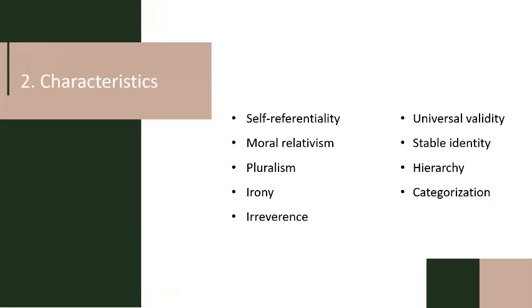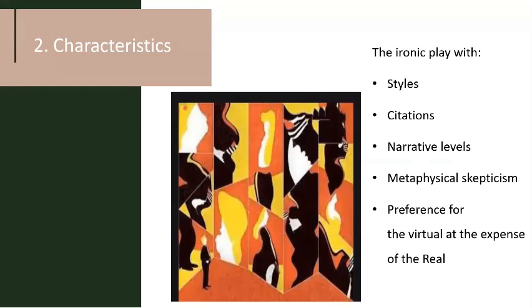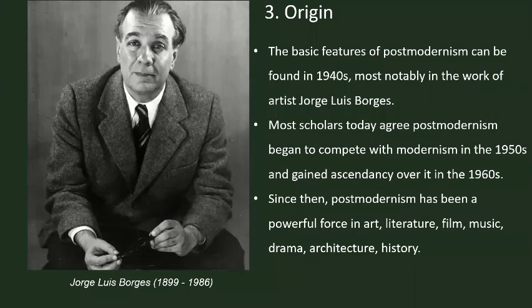Postmodernism is characterized by self-referentiality, moral relativism, pluralism, irony, and irreverence. It rejects universal validity, stable identity, hierarchy, and categorization. Primary features of postmodernism typically include ironic play with stylizations, narrative levels, and metaphysical skepticism, with a preference for the virtual at the expense of the real.